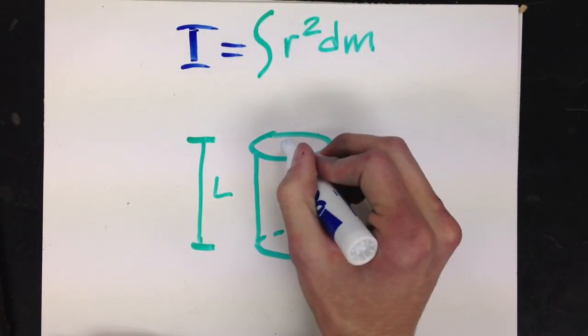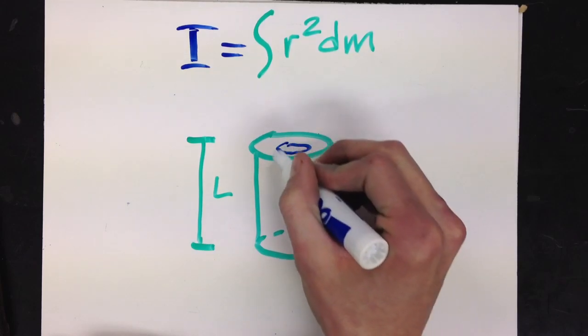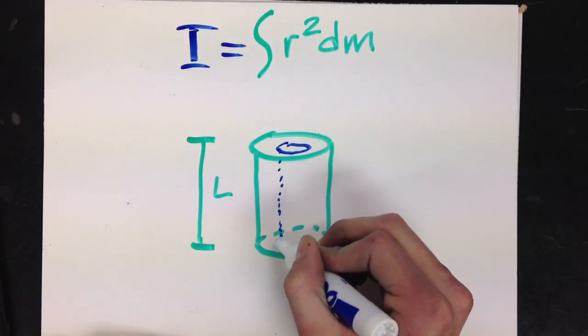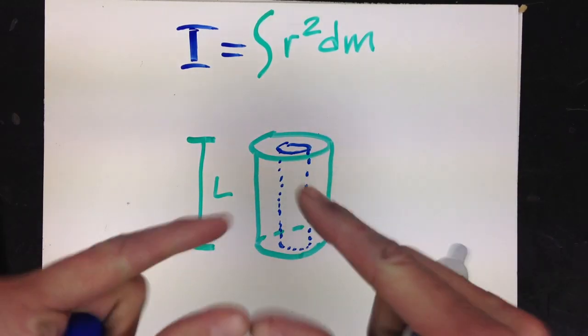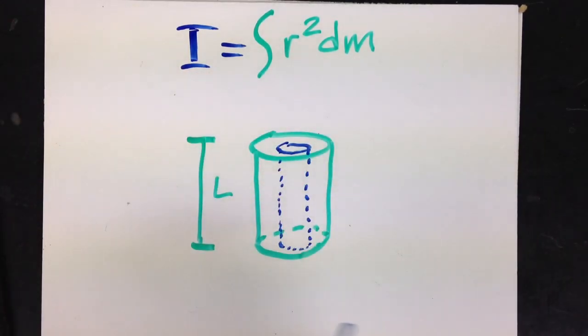Imagine that you kind of trace out this portion that goes all the way down and through. And it's just a very thin sheet in the cylinder, kind of like this sheet of paper.